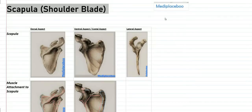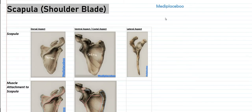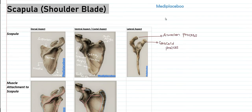Welcome to mediplacebo. In this video I'll be teaching you about the bony features and the attachments of the scapula. The scapula has two surfaces: the dorsal surface and the coastal surface, also known as the ventral surface. It has three borders: the medial border, the lateral border, and the superior border. We also have three angles: the inferior angle, the glenoid angle (also known as the lateral angle), and the superior angle. There are three processes: the coracoid process, the acromion process, and the spinous process, also referred to as the crest of the spine.